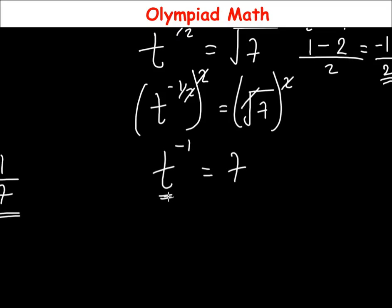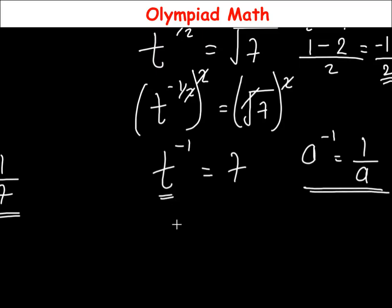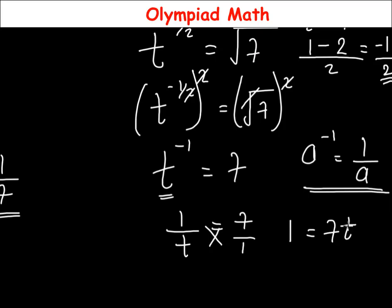There is a principle that a raised to the power of minus 1 equals 1 over a. Applying this, t^(−1) becomes 1 over t, so 1 over t equals 7. Writing 7 as 7 over 1 and cross-multiplying: 1 equals 7t. Dividing both sides by 7, t equals 1 over 7.